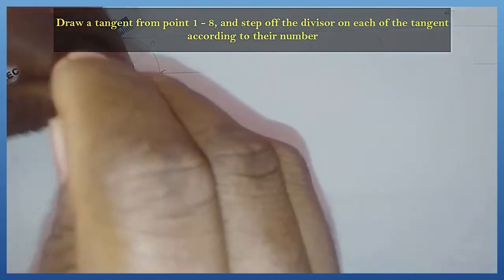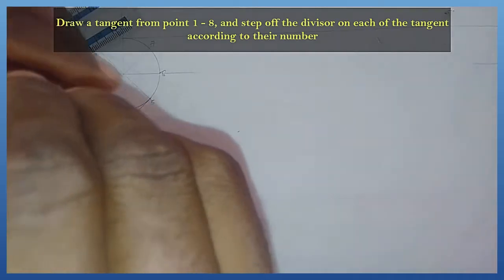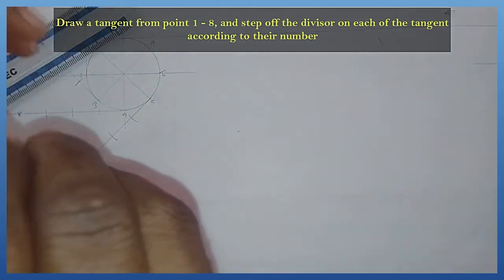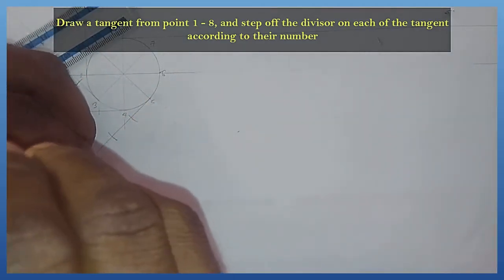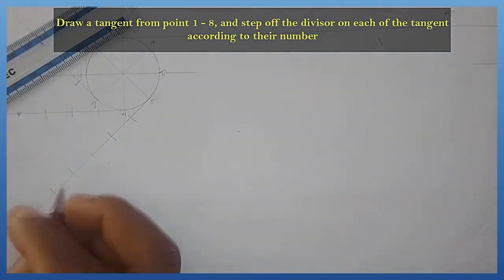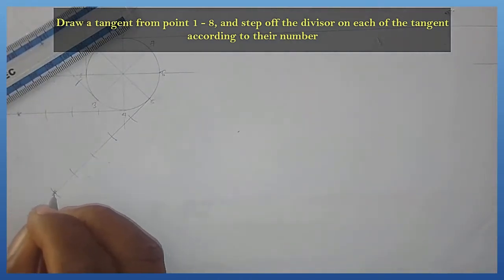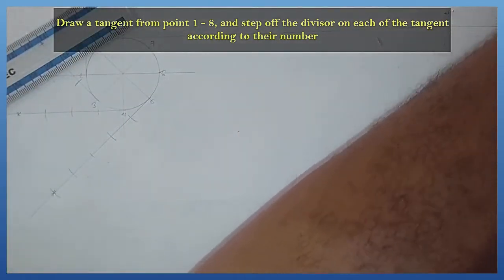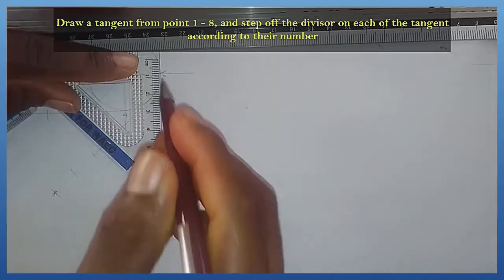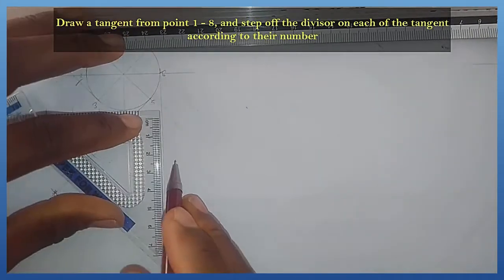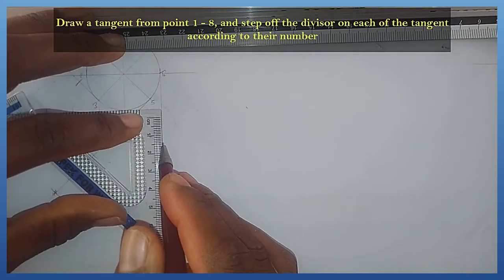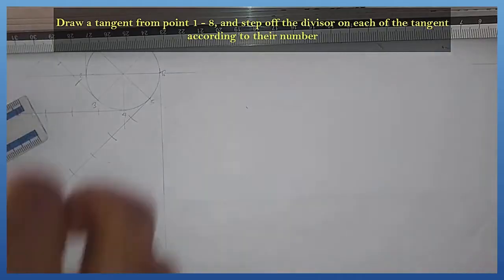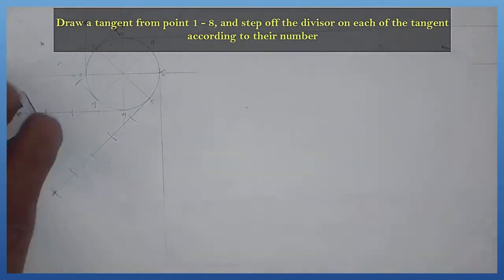1, 2, 3, 4, and 5. So this is 5 times. On number 6, I am drawing the tangent on point number 6. Then I'm stepping it off 6 times.